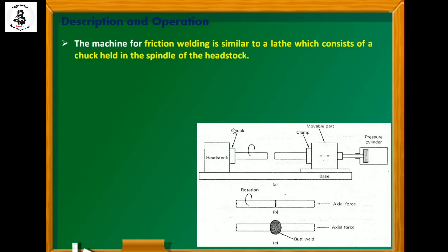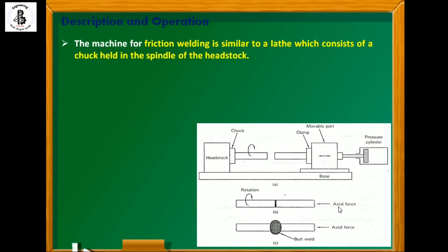The machine for friction welding is similar to a lathe machine, which consists of a chuck held in the spindle of a headstock. The other end has a movable or sliding chuck connected with a pressure cylinder mechanism. One component is rotated and the other is fixed, and by the application of axial force the joint is carried out. The friction welding process produces a butt-type joint.